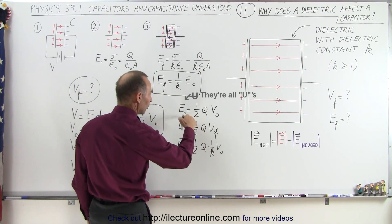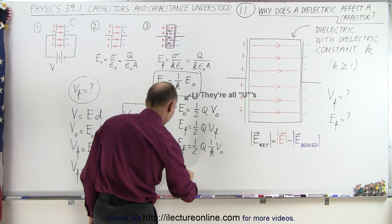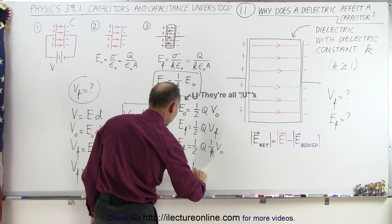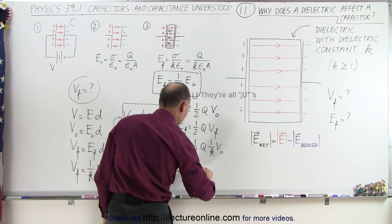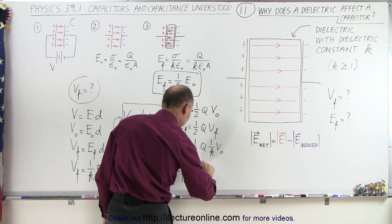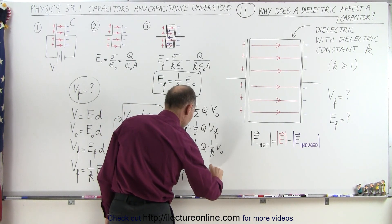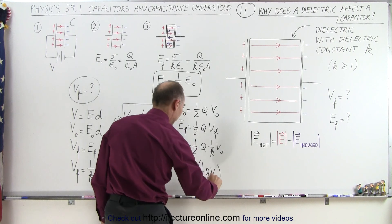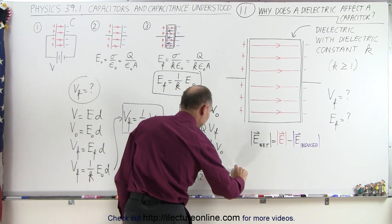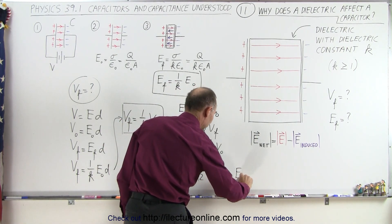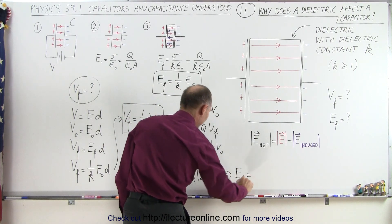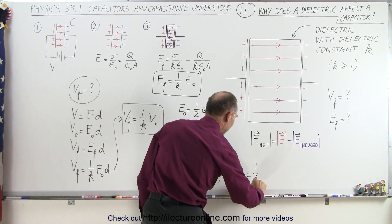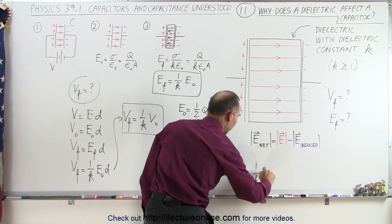So U_final is equal to one over k times one-half Q·V_initial, and that means that U_final can be defined as one over k times U_initial.